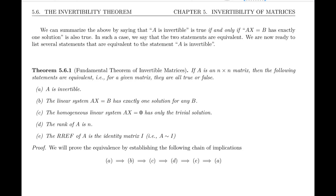Welcome to the video on the invertibility theorem. In the last section, we discussed how the statement 'a is invertible' is equivalent to the statement that the linear system ax equals b has exactly one solution for every b. What we mean by equivalent is that you can insert an if and only if between the two statements — the same as a double implication arrow. So those are two equivalent statements.